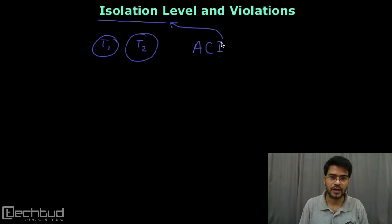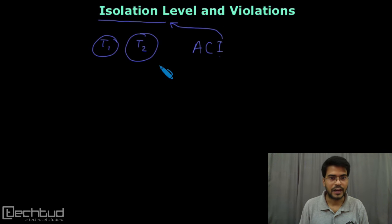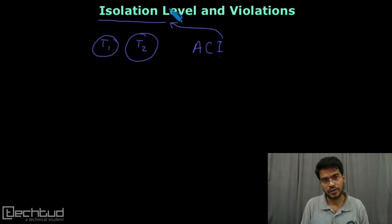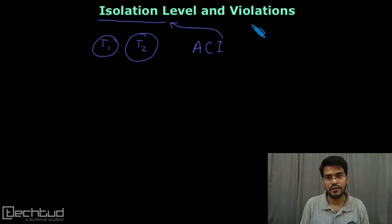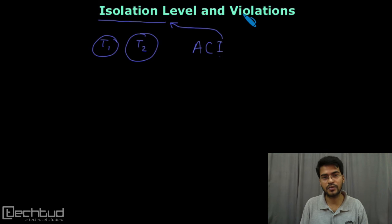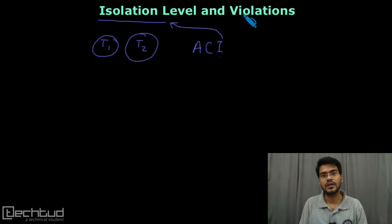The idea is to have transactions isolated from each other, and for that we have various isolation levels defined in SQL. Related to each isolation level, we also have some violations — which isolation level is strict and which one has some violations allowed.